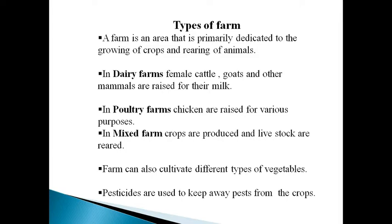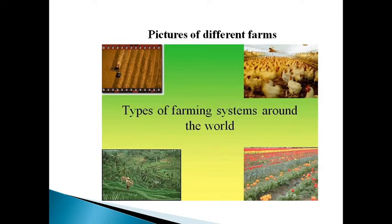Livestock are domestic animals raised on farms for labor and commodities. Farmers can also cultivate different types of vegetables like potatoes, lettuce, carrot, cauliflower, and cucumber. In growing crops, farmers can produce organic pesticides using recycled products from the farm.